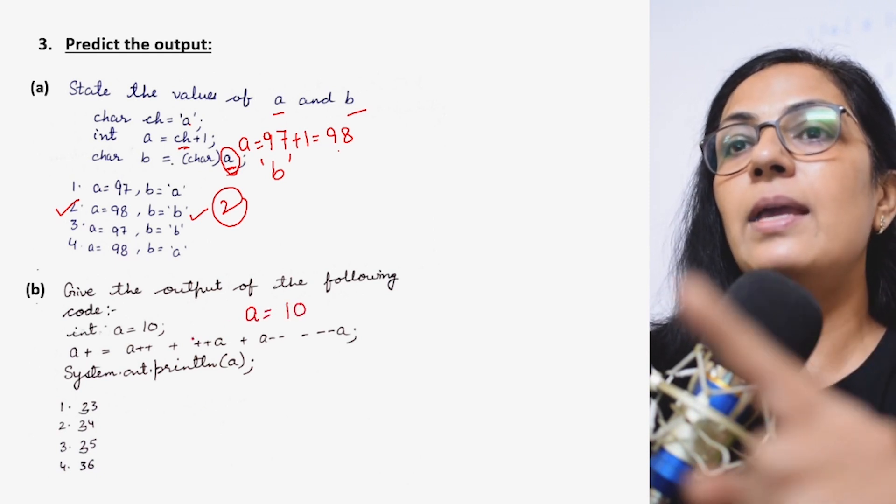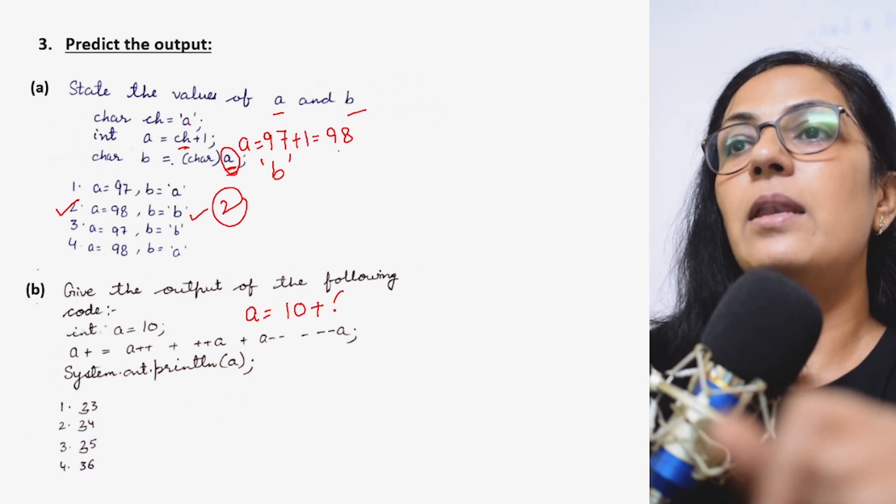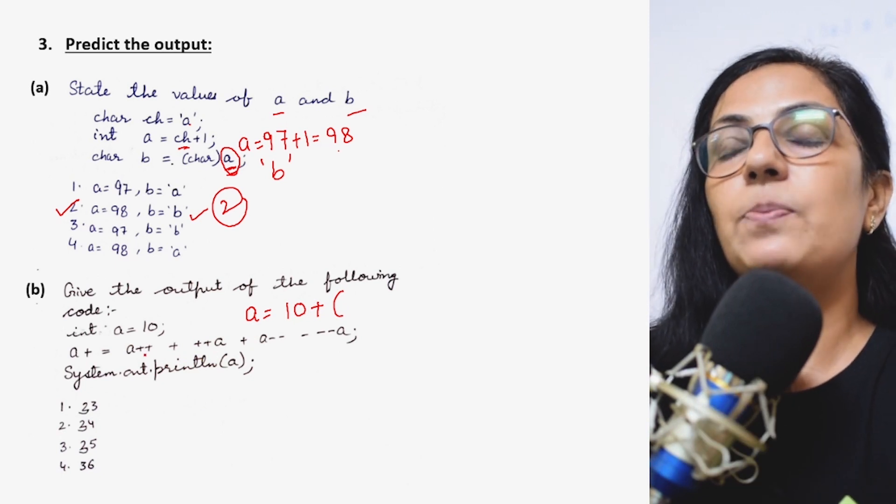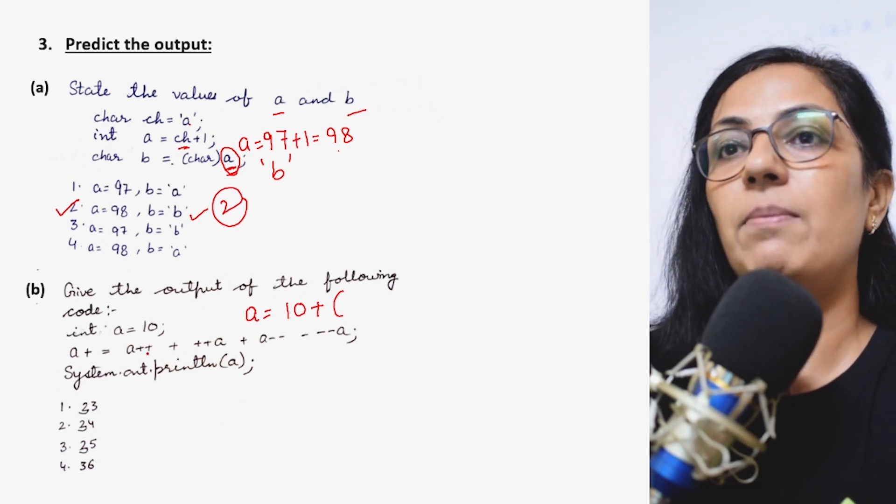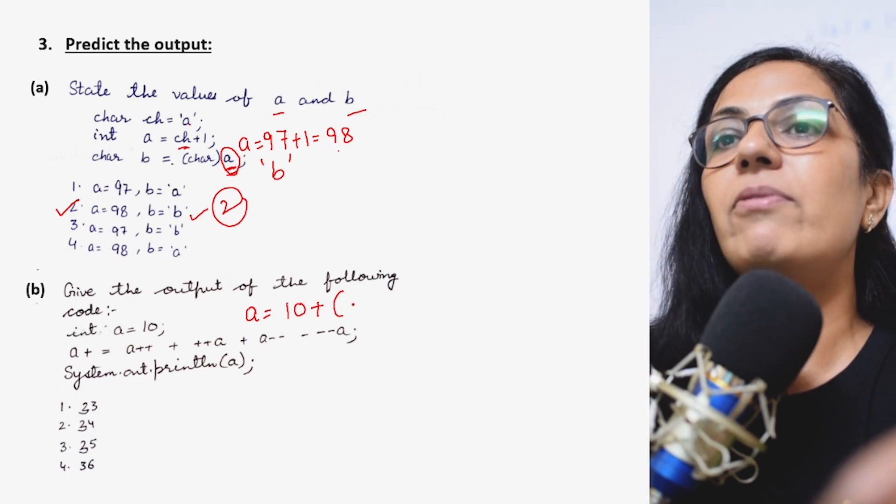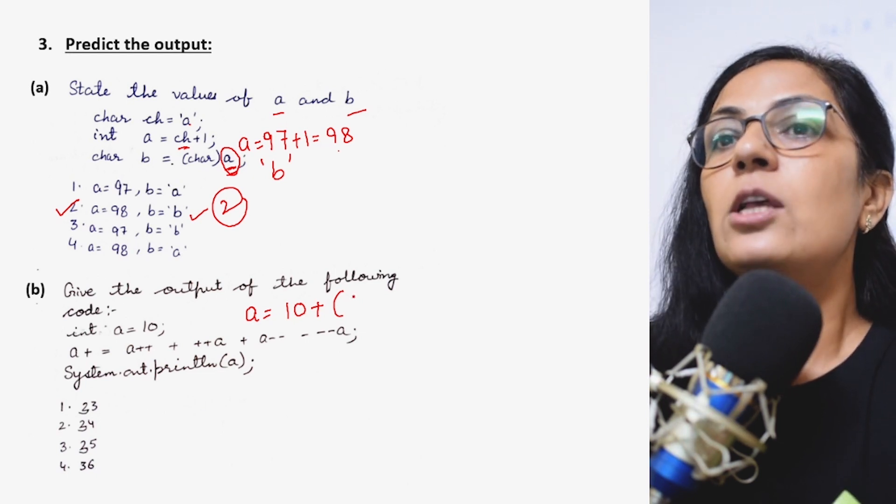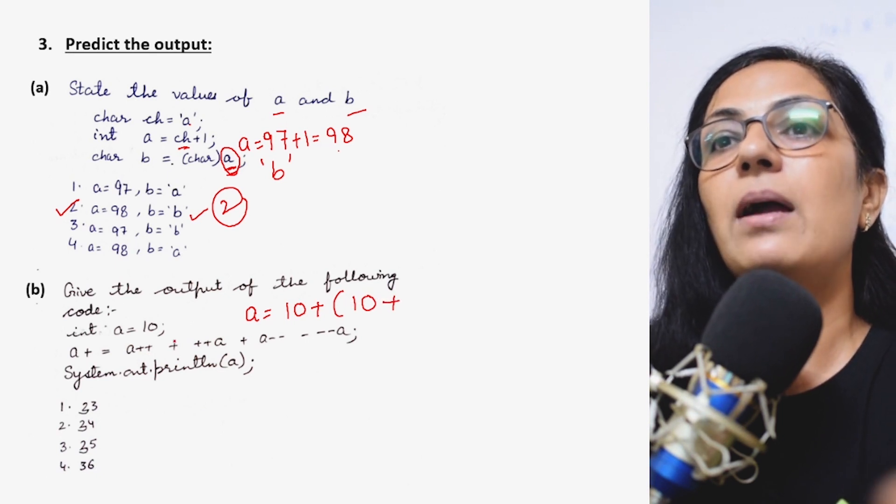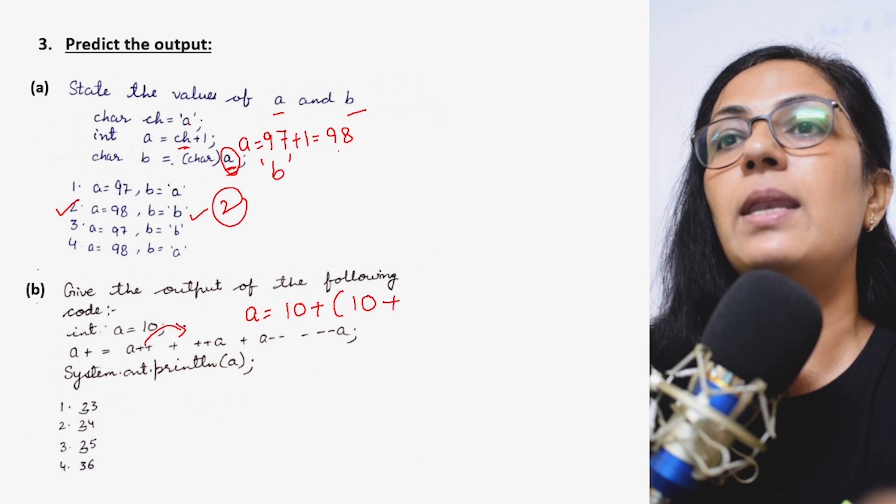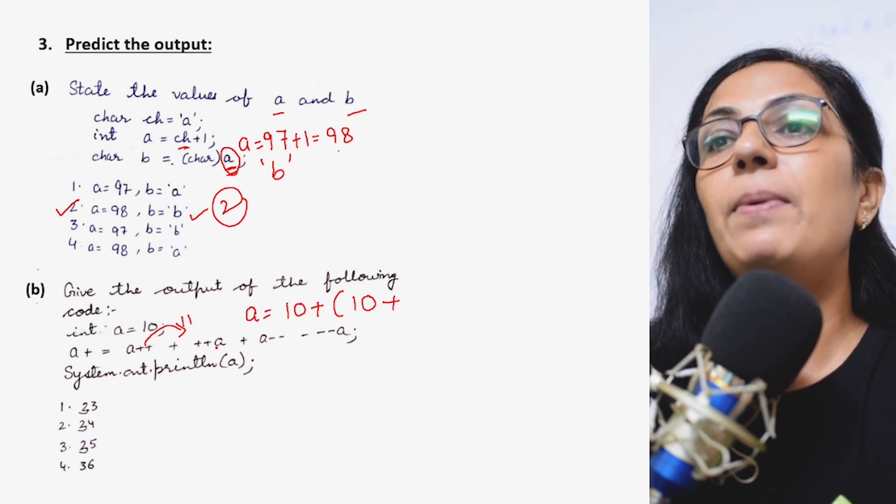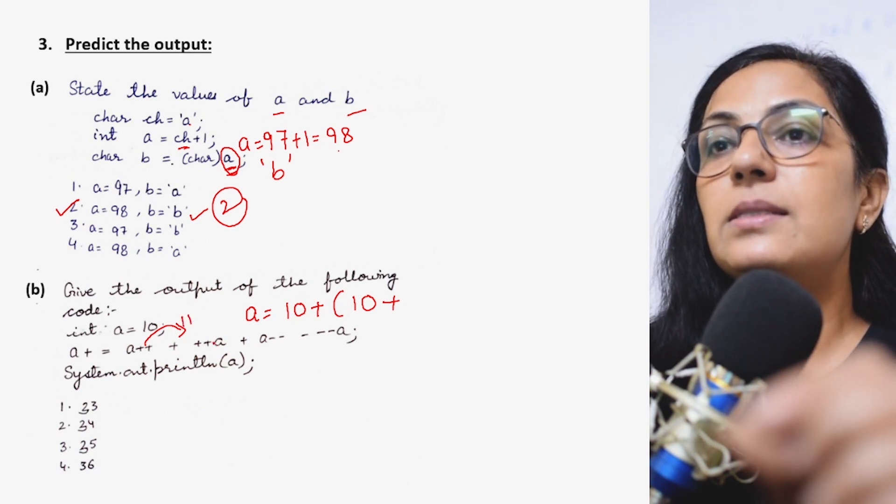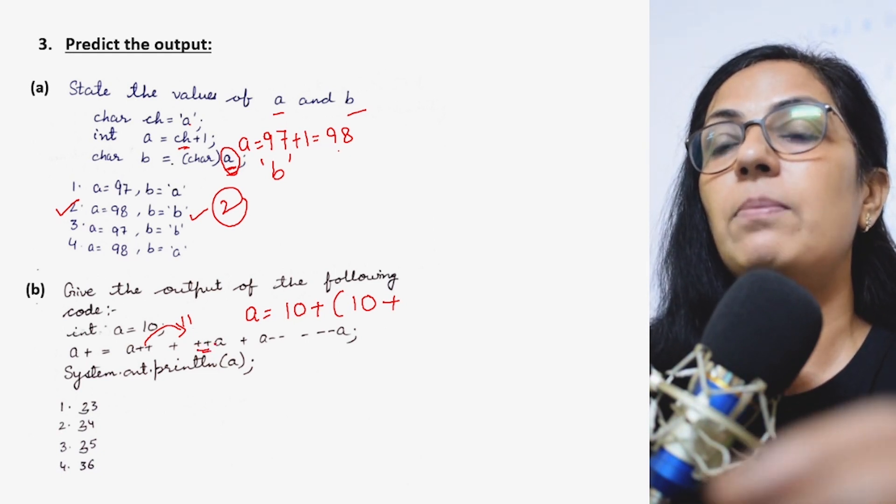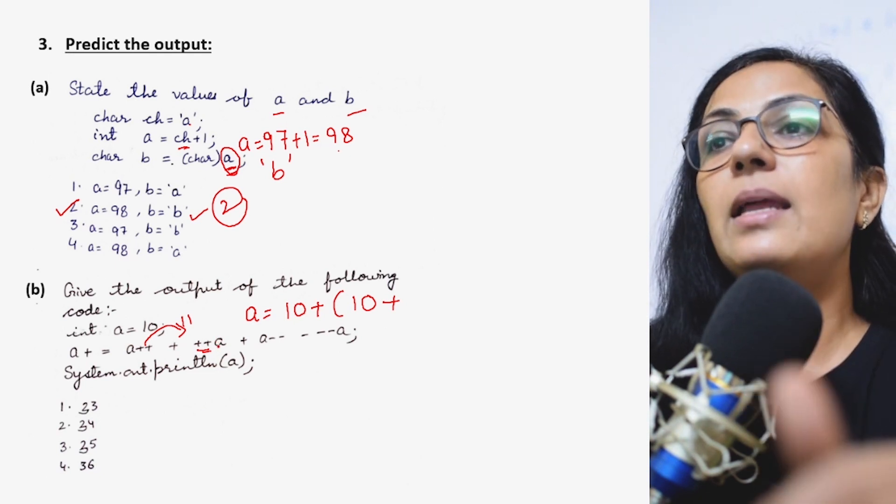The value of a is initially given 10 plus now here whatever is written that we will be putting within the brackets. a plus plus, this is post increment. So post increment first uses the value and then changes. So here 10 will be used and then after using 10 it will become 11. So how it is going to the next term, it is going as 11. Then plus plus a, it is receiving the value of a as 11 but here it is pre increment. That means first the value will be changed and then it will be used.